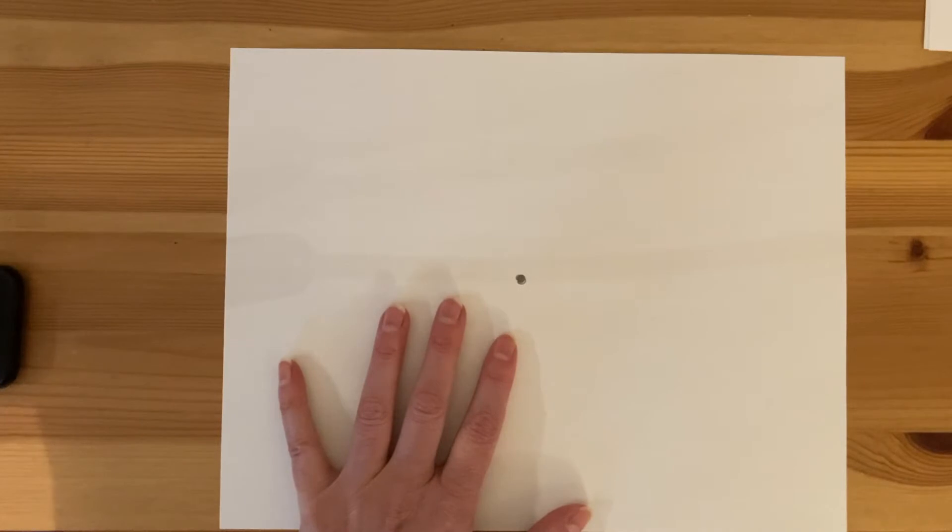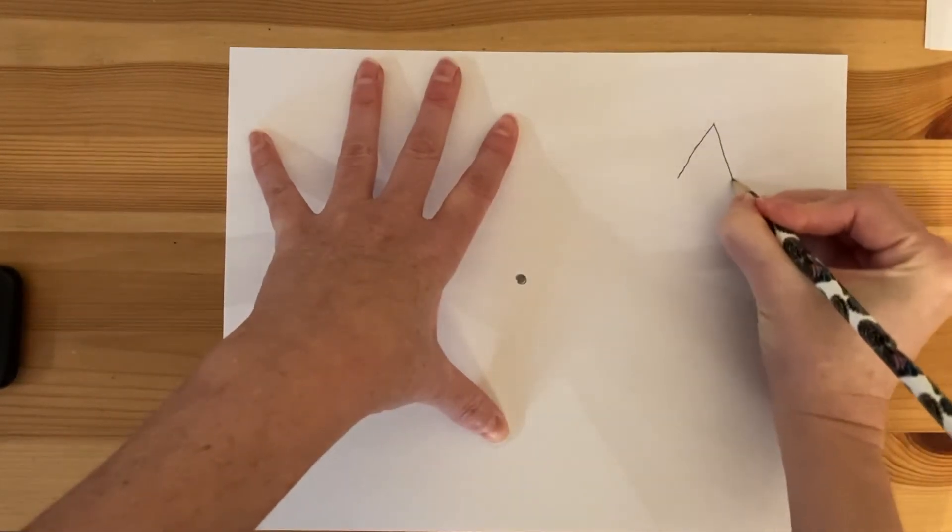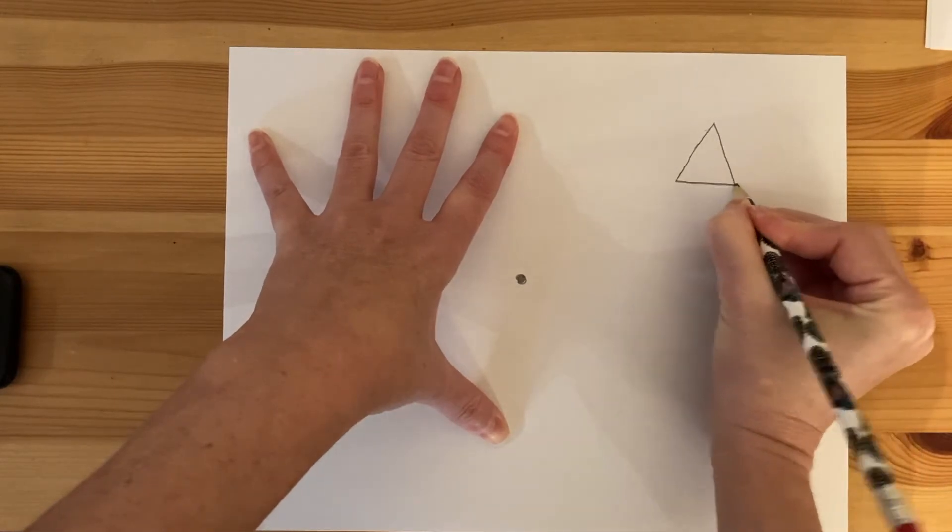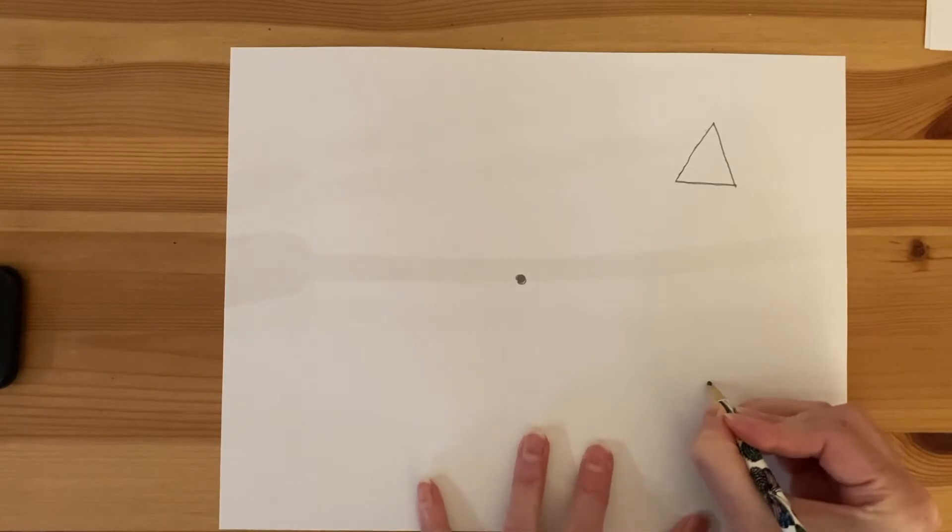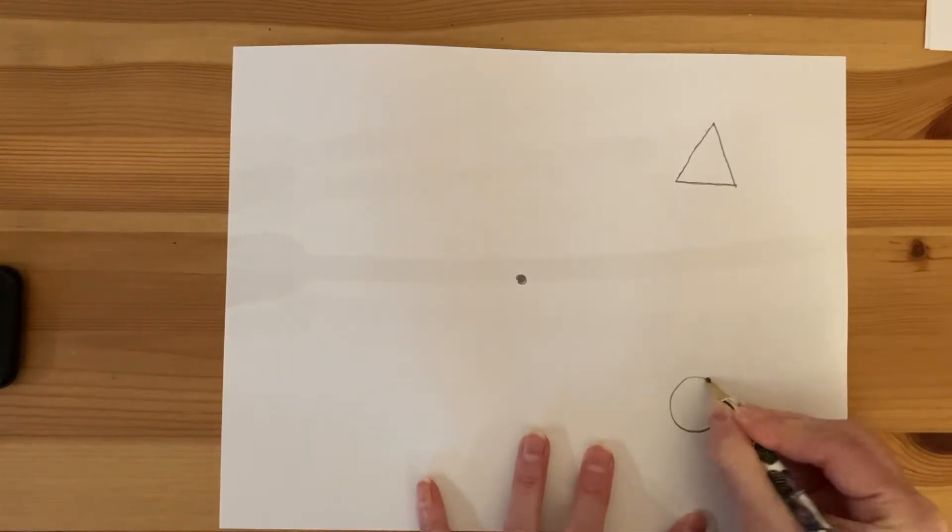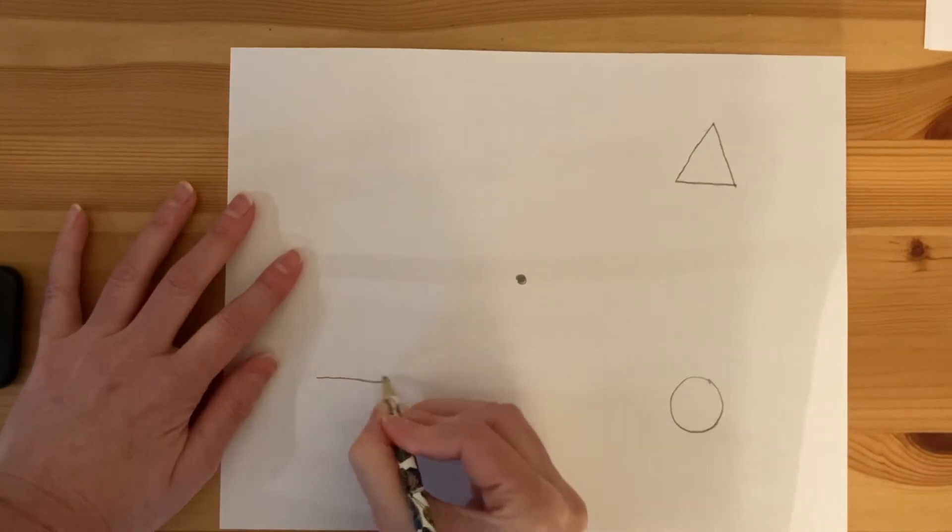Then I want you to pick four shapes and draw them out away from your point and it can be any shape you want at this point just four shapes and if you get the hang of it and you want to add more shapes later you can.